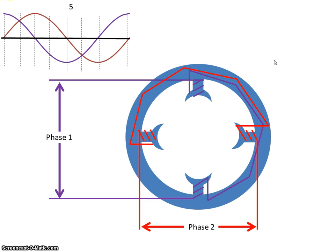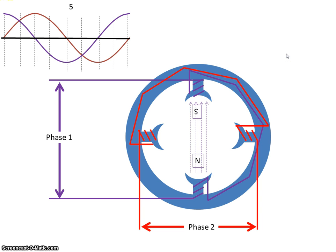At time five, the current through phase two is zero and the current through phase one is at a maximum in the opposite direction. So we will have a north pole here and a south pole there — those are our flux lines.